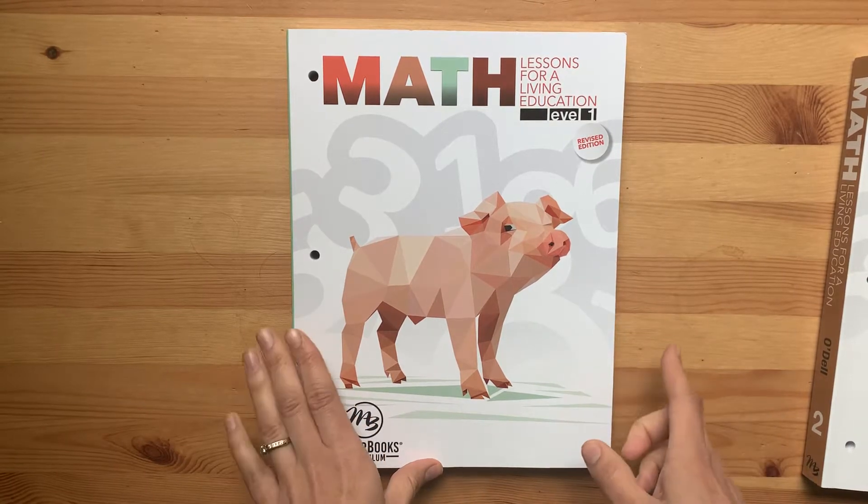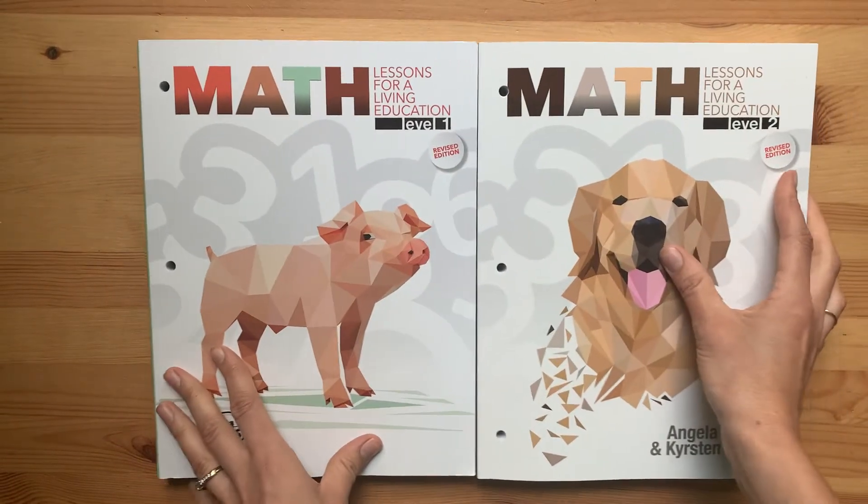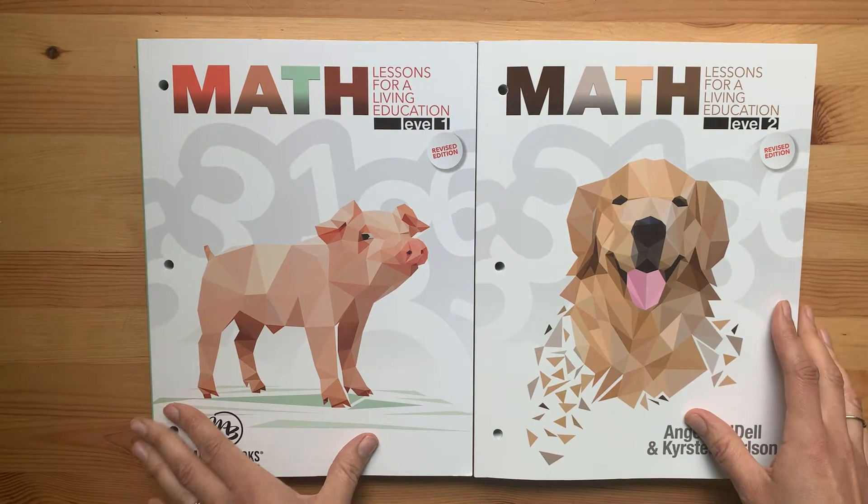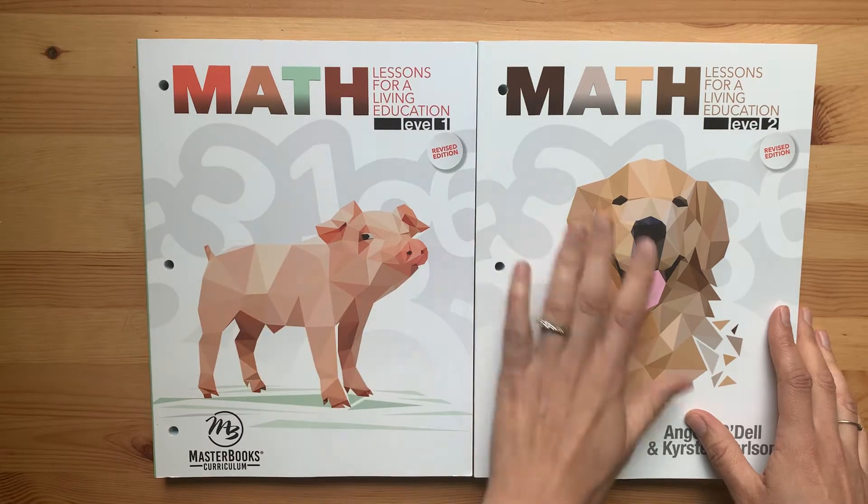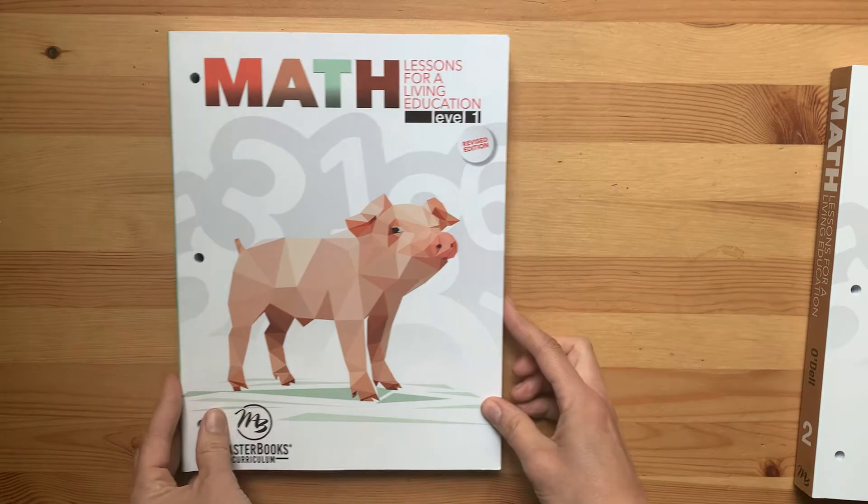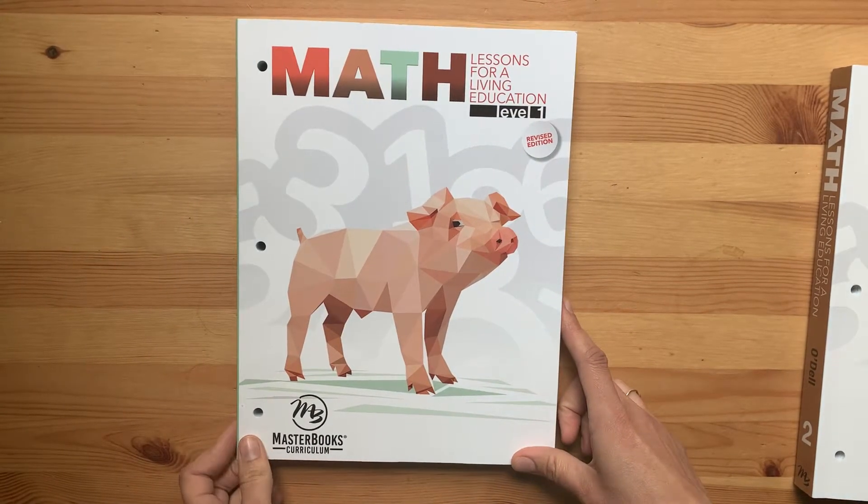He is almost 7 and I actually bought Levels 1 and 2 because I wasn't completely sure which one would be best for him. After looking through all of Level 1 and Level 2, we had already covered everything that was in Level 1 in his kindergarten with the Good and Beautiful curriculum that we used last year.